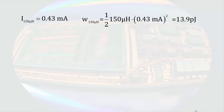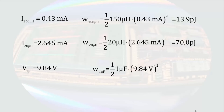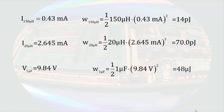We can then use these values to determine the energy in each component. The energy in an inductor is one-half times the inductance times the current squared. For the 150-microhenry inductor, we calculate 13.9 picojoules of energy. For the 20-microhenry inductor, the energy stored is 70 picojoules. Knowing the voltage across the capacitor, we determine the energy stored in the capacitor as one-half times the capacitance times the voltage squared, resulting in 48.4 microjoules. Since the problem started with parameters that had two significant figures, we should correct the answers to reflect that at the end.